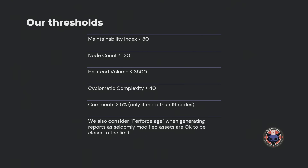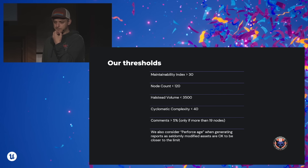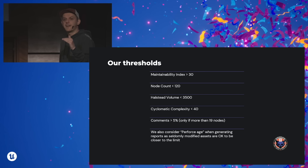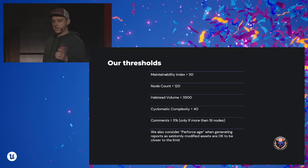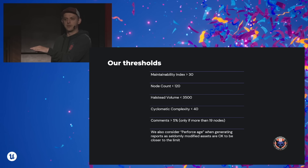Here are our thresholds. In our code base, when the validator runs through your blueprint and you get the output in the message log, it will tell you your volume and maintainability. The blueprint needs a maintainability index bigger than 30, no more than 120 nodes, volume smaller than 3,500, no more than 40 cyclomatic — 40 cyclomatic is relatively high, meaning 40 different paths — and we require at least 5% comments, but only if you have more than 19 nodes. Also interesting: if you run statistics, try to incorporate Perforce age — when was the last modification. Sometimes it's okay to have low maintainability if a blueprint is seldomly modified. You want to find blueprints that are very often modified but also have low maintainability.